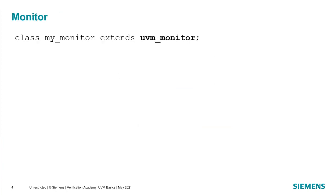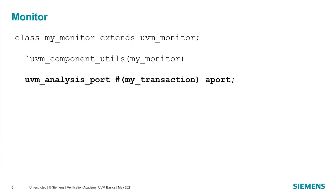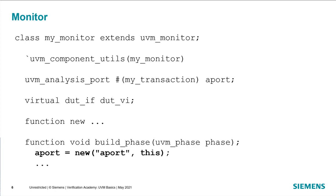The monitor is extended from the UVM monitor base class — this is to communicate the intent that we want this to be a monitor. It's registered with the factory, and we declare the analysis port as part of the monitor. There's also a virtual interface in the monitor, because that's how we will see the pin level activity. In the build phase, we construct the analysis port using the constructor new instead of the factory method create, because the analysis port will always be the same type — an analysis port parameterized by the transaction object — so using the constructor is perfectly fine.